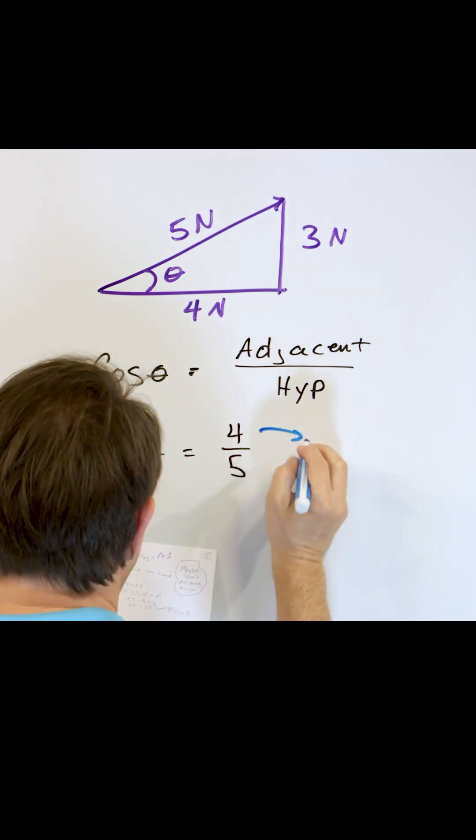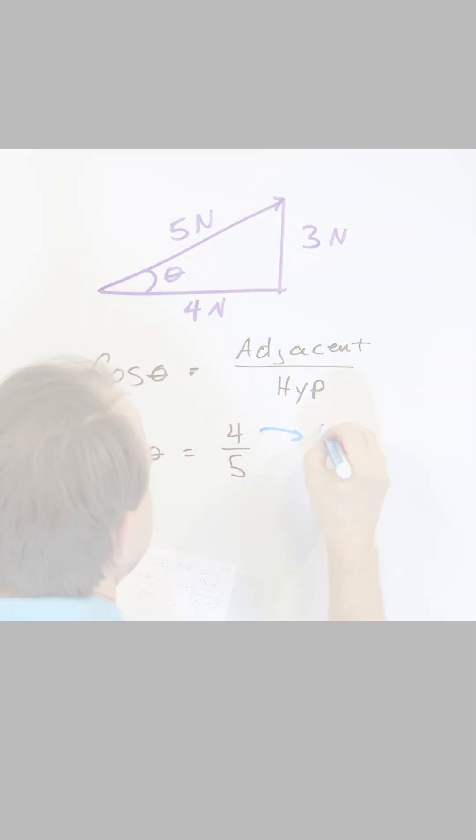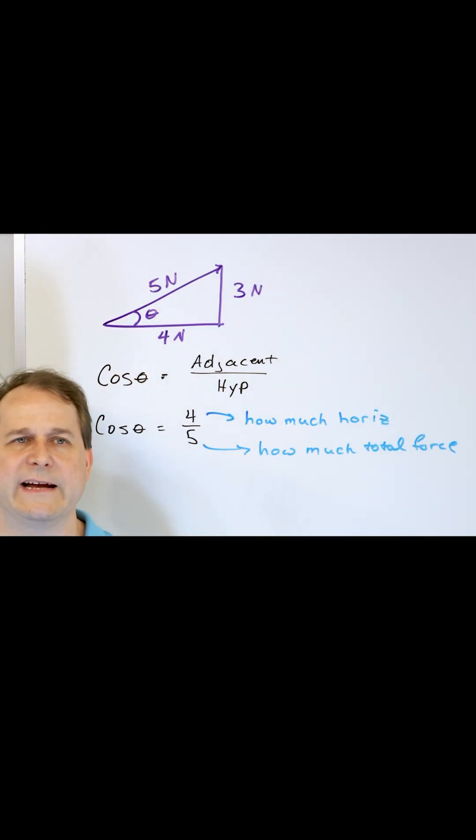How much of this force is in the horizontal direction? If I told you in general, 0.9 of this force is in the vertical direction, you would know that almost all of it's in the vertical direction. If I told you 0.6 of this force is in the horizontal direction, then you would know just a little bit more than half is in the horizontal direction.